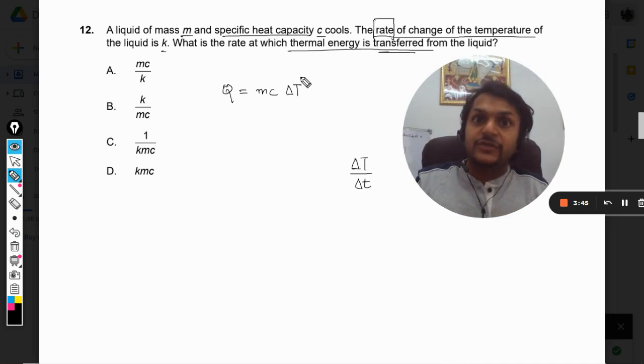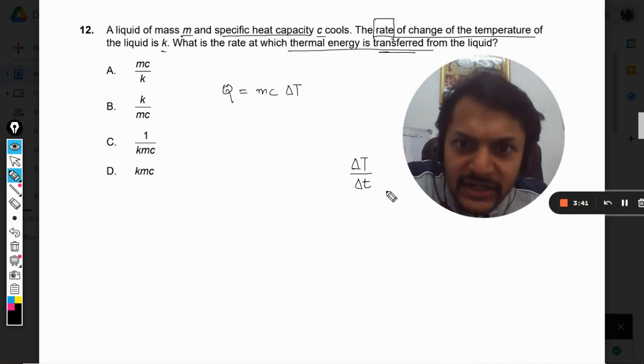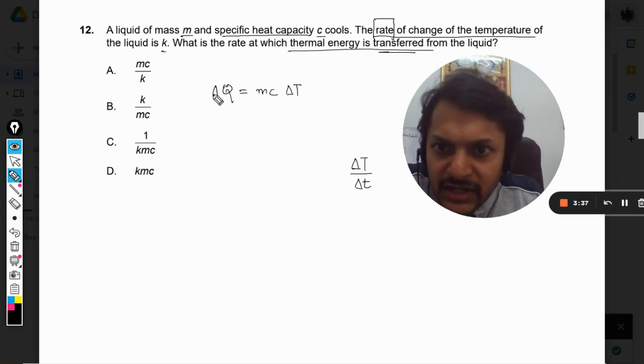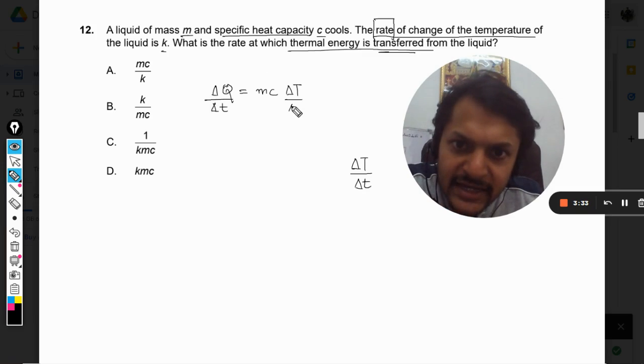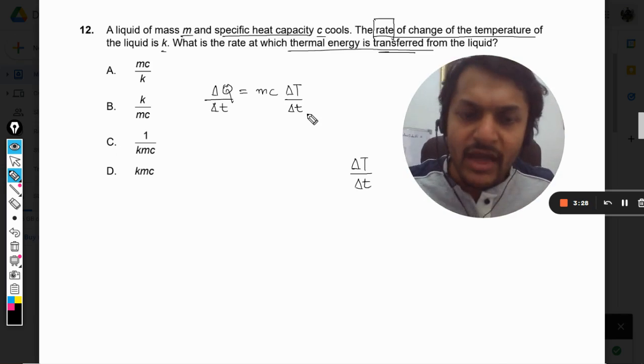Rate of change of heat transfer. Wherever it is rate, you have to divide it by time. So it will be ∆T by ∆t. It means we must divide this equation by ∆t. So we make it ∆Q divided by ∆t, and it will be divided by ∆t because m and c are constant.